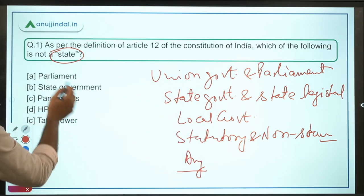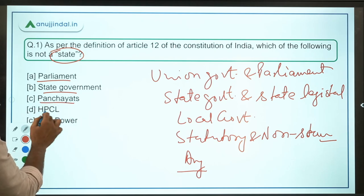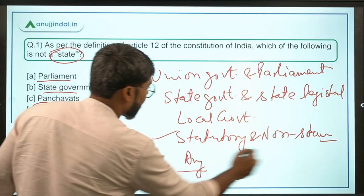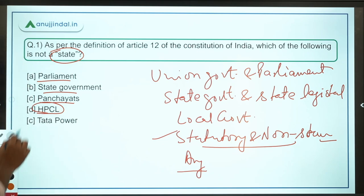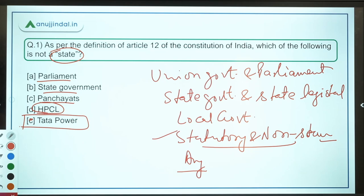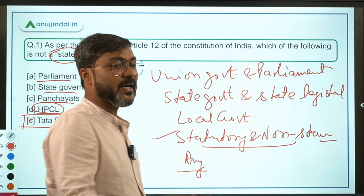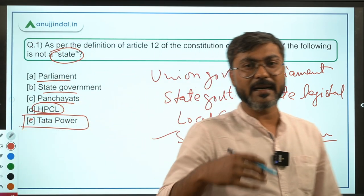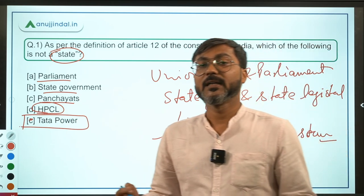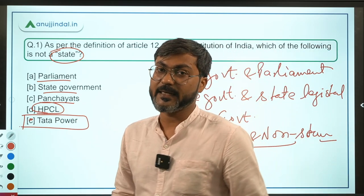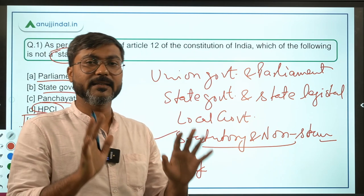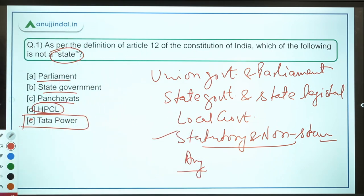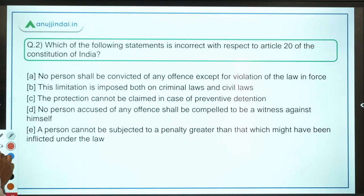The question asks which of the following is not a State — Parliament, State Government, Panchayat, HPCL fall under the statutory and non-statutory body category. Tata Power, however, is a private company. So option E is the correct answer. If Tata Power in any case acts as an instrument of the State, then it would come under the definition of State; otherwise it will not.